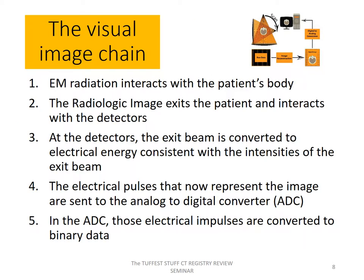The visual image chain includes a sequence of events important for us to review. Number one, electromagnetic radiation interacts with the patient's body. Number two, the radiologic image that exits the patient interacts with the detectors. Number three, at the detectors, the exit beam — which contains the radiologic image — is converted to electrical energy consistent with the intensities of the exit beam. Number four, the electrical pulses that now represent the image are sent to the analog to digital converter. Number five, in the analog to digital converter, those electrical impulses are converted to binary data.